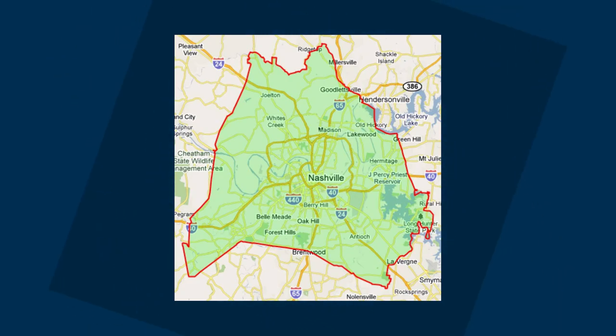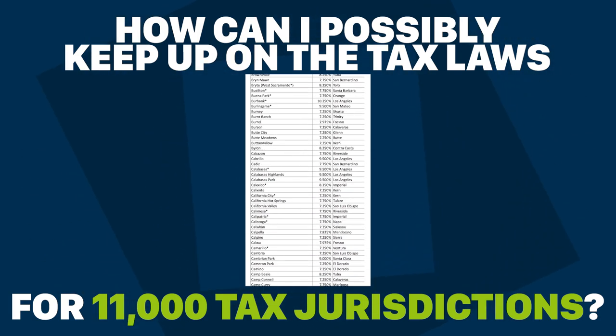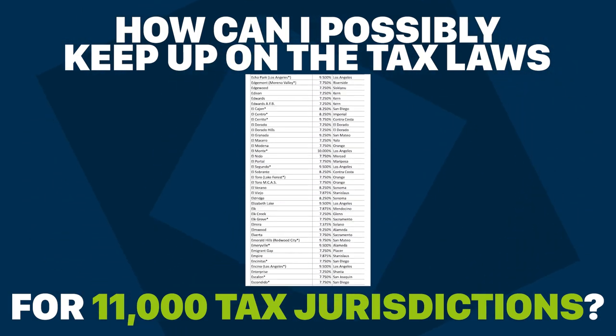Not only does every state have different sales tax rates and laws, but so do local governments too — like the city, the county, the township. So how can you possibly keep up on the tax laws for 11,000 tax jurisdictions? Well, the good news is you don't have to. But if you're serious about building and scaling a business, you need to understand some basic principles, and then you'll know exactly what to do without having to learn over 11,000 tax jurisdictions across the US.